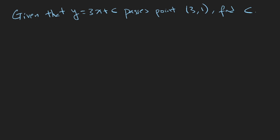Let us look at this example. However, given that y equals to 3x plus c passes point (3,1), find c. So we can pick out the equation of the line. It's y is equal to 3x plus c. And we know that c is the y-intercept, 3 is the gradient. So if they want us to find c, we can just substitute (3,1), because we know that this line passes through (3,1).